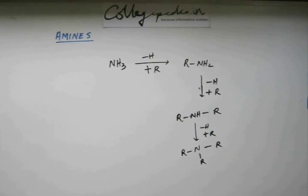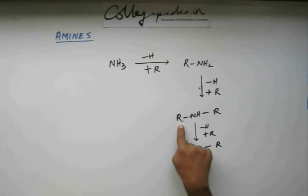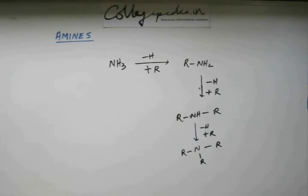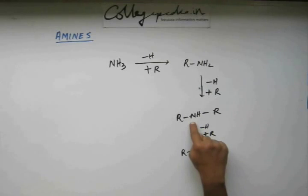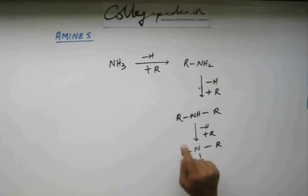So these are the three classes of amines that we will be studying in this chapter. Amines are basically nitrogen atom attached with at least one carbon. Depending upon the number of carbons this nitrogen is attached with, the degree of amine would come out of it.